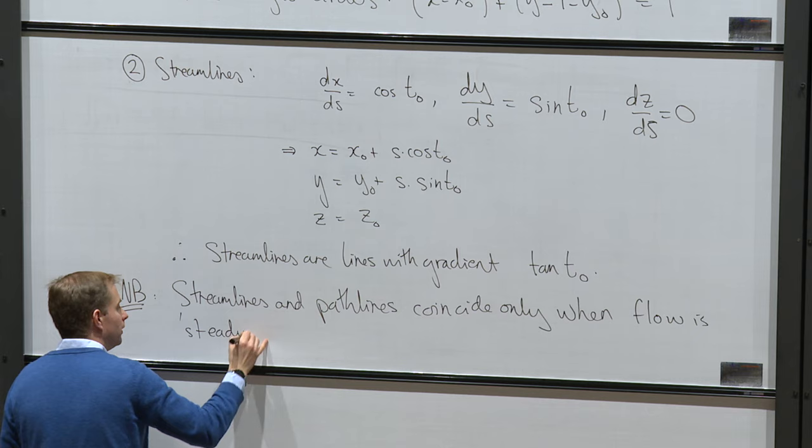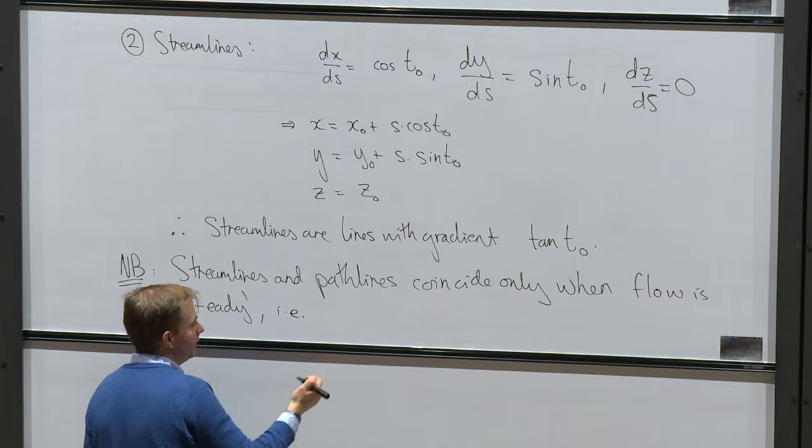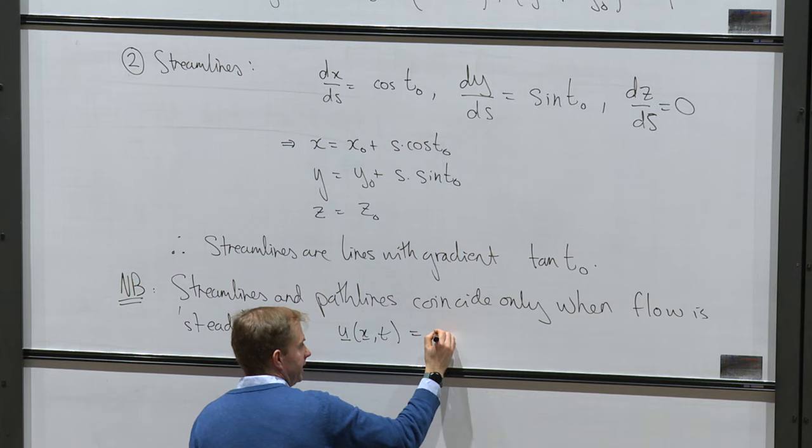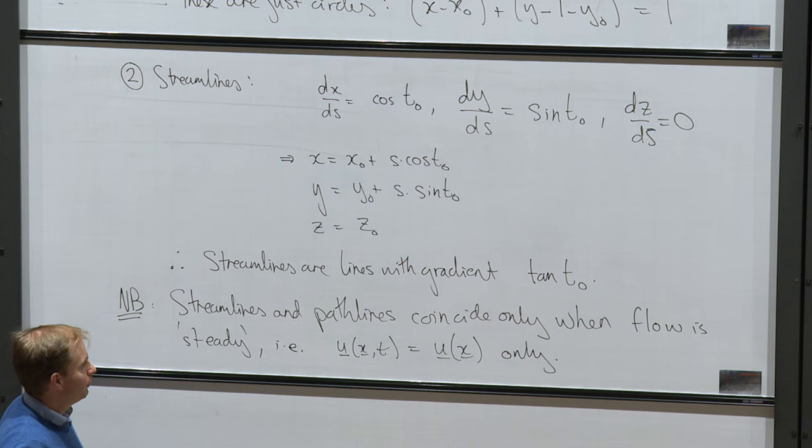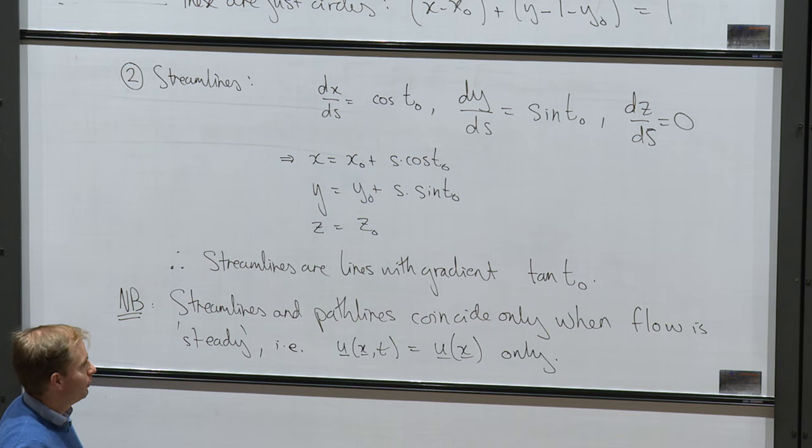In general, streamlines and pathlines are different. But there is an important special case: when the velocity field does not vary in time — when the flow is steady, meaning ∂u/∂t = 0, or equivalently u = u(x) only with no explicit time dependence — in that situation the pathlines and streamlines actually coincide. Many problems in this course are steady, but it's important to realize that in unsteady situations they are not the same.